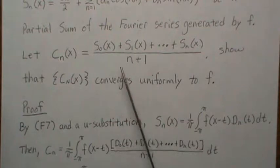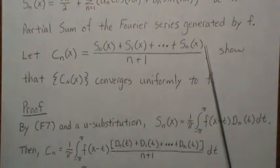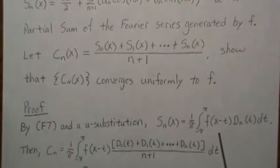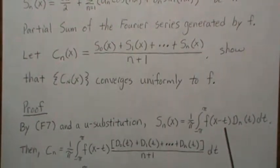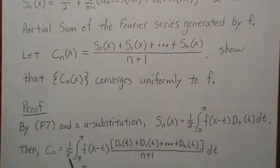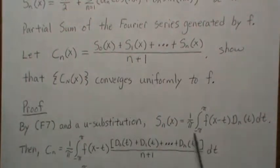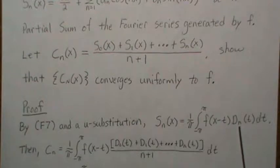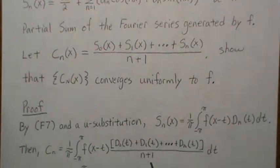Notice that if we plug this in for each one of those terms, the integral and the 1/π factor are common to every one of them, so we can factor them out. The sum goes from 0 to n, divided by n+1, and we're working in the t-world. So this Cesàro sum can be written like this.